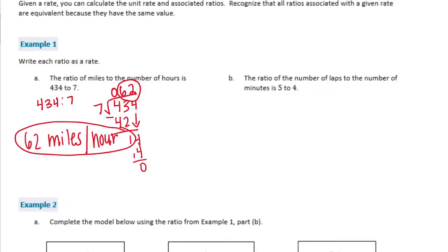The ratio of the number of laps to the number of minutes is 5 to 4. So if the ratio is 5 to 4, then we can figure out the rate by dividing. 5 goes into 4 one time. Subtract. If we get 1 with a remainder of 1, we can just make it 1 and 1 fourth. So you can either say it's 5 fourths laps a minute or 1 and 1 fourth laps per minute.